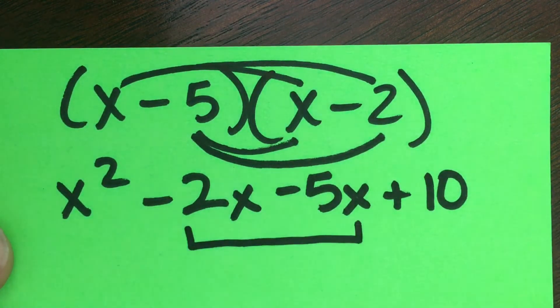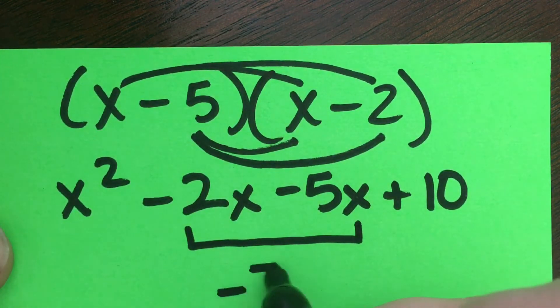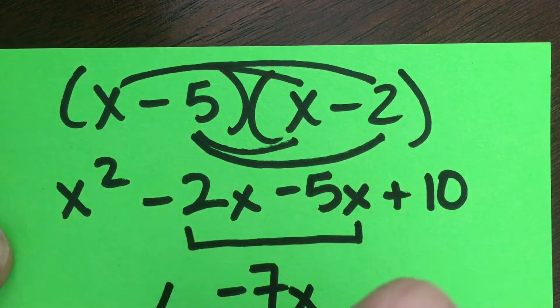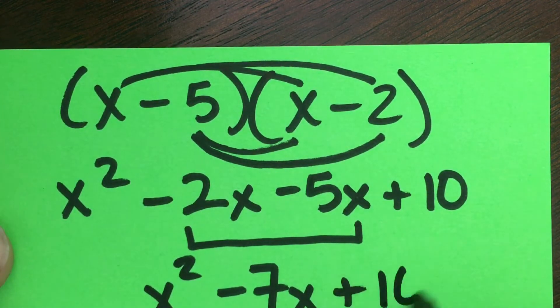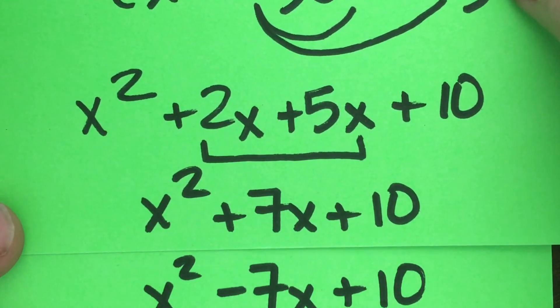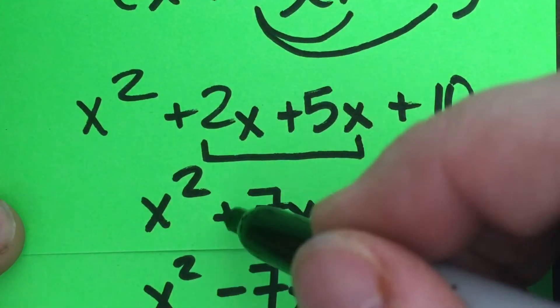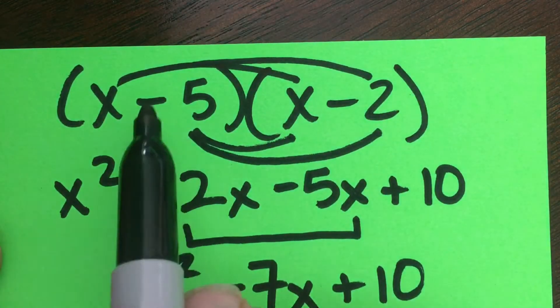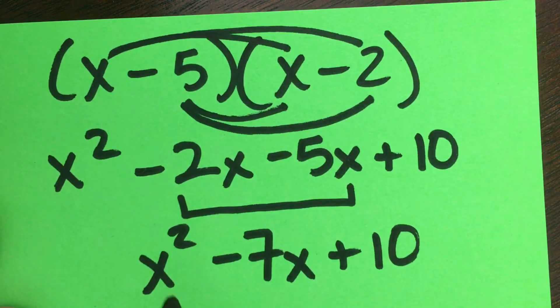And so when these middle terms combine, they actually get a total of a negative 7x. And so when you compare those two, it looks pretty identical. What changed was the sign of the middle term. So this is what happens when both of those signs are negative.